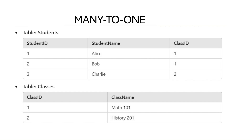Now let's talk about the many-to-one relationship, which is essentially the inverse of the one-to-many relationship. Here, multiple records in table A can be linked to a single record in table B. For example, a students table and a classes table: many students can belong to one class. This relationship is the same as one-to-many — it's just viewed from a different angle. If classes is your left table and students is your right table, it becomes a one-to-many relationship, because one class can have many students.